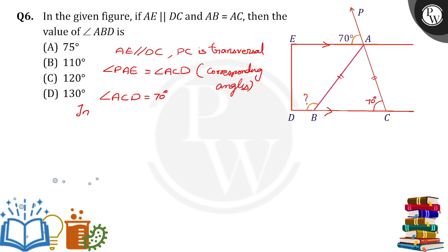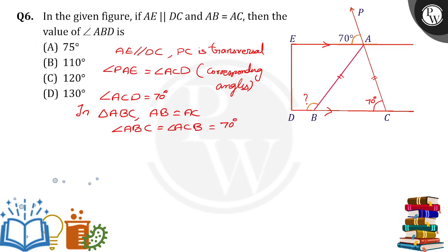Now in triangle ABC, it was given that AB is equal to AC. When sides are equal, their opposite angles are also equal. That means angle ABC is equal to angle ACB, and both are equal to 70 degrees. So this angle is also 70 degrees.